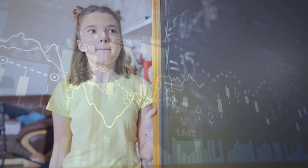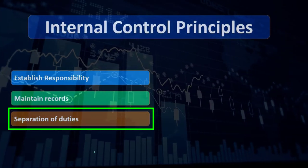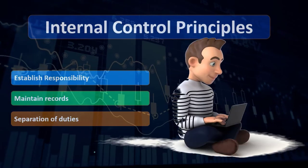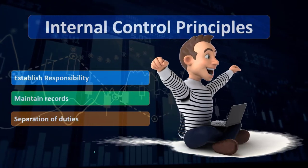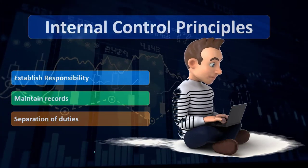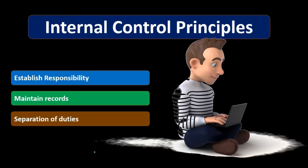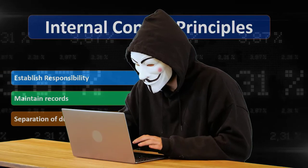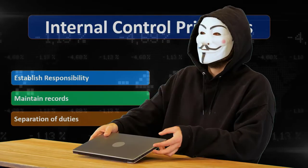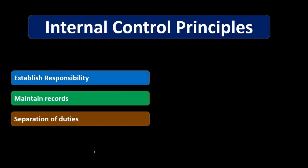Separation of duties is probably the main internal control to think of for a large organization. One key separation is the separation of custody of assets and the recording of assets into the system. We want to separate them so that someone couldn't, for example, steal cash and record the theft at the same time. Separation of duties in many different areas is a key component of internal control.